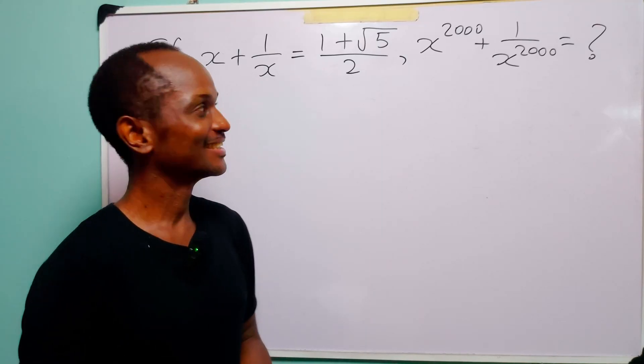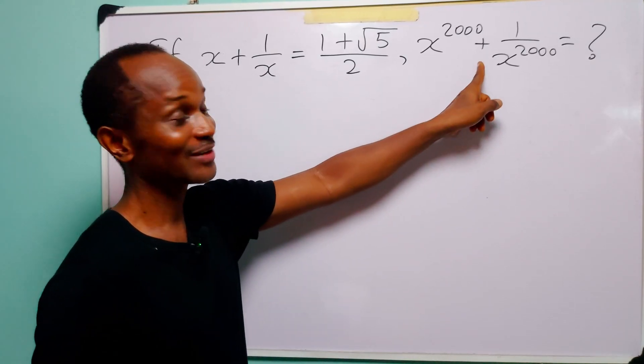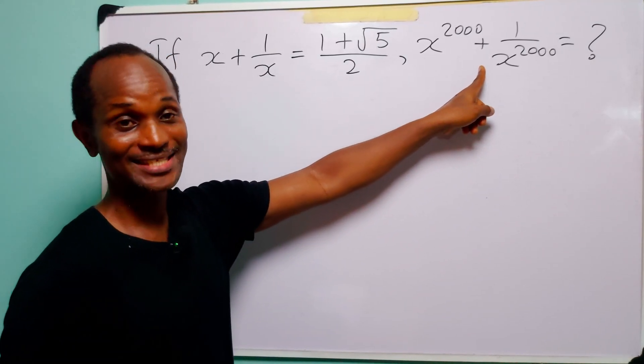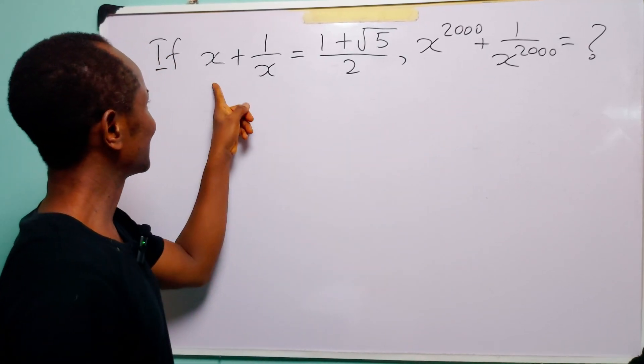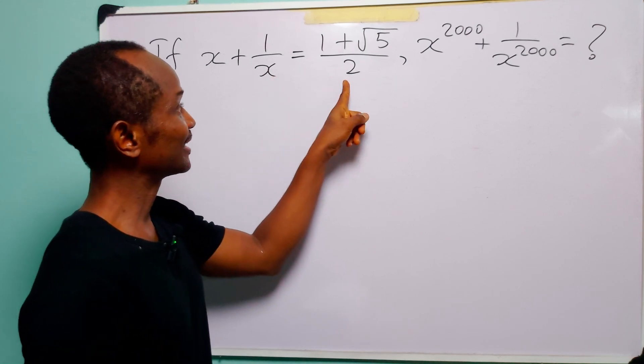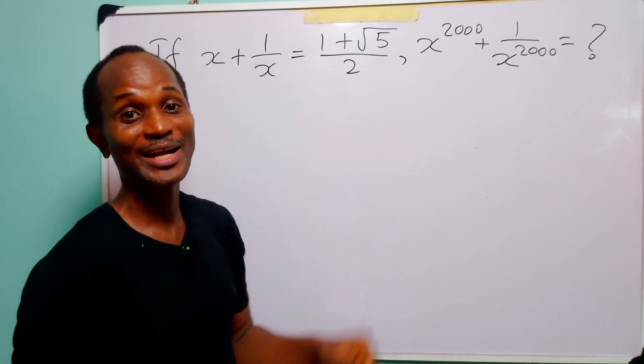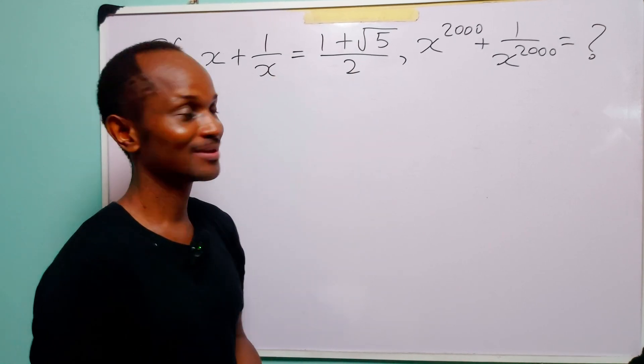Hello and welcome. In this tutorial, our task is to find the value of this quantity, given that x plus 1 over x is equal to 1 plus root 5 divided by 2.